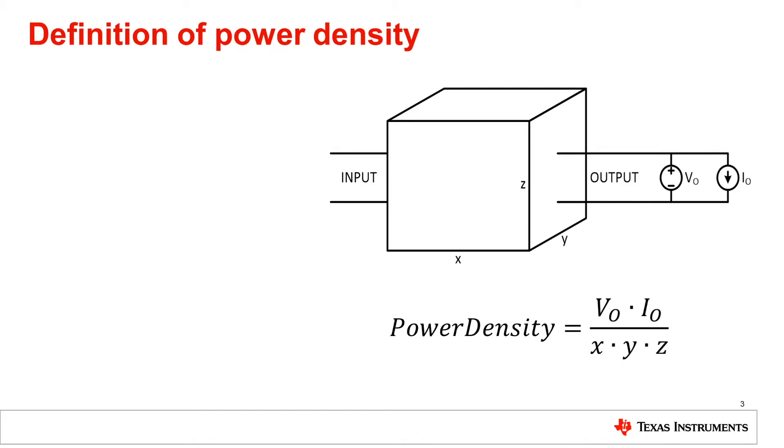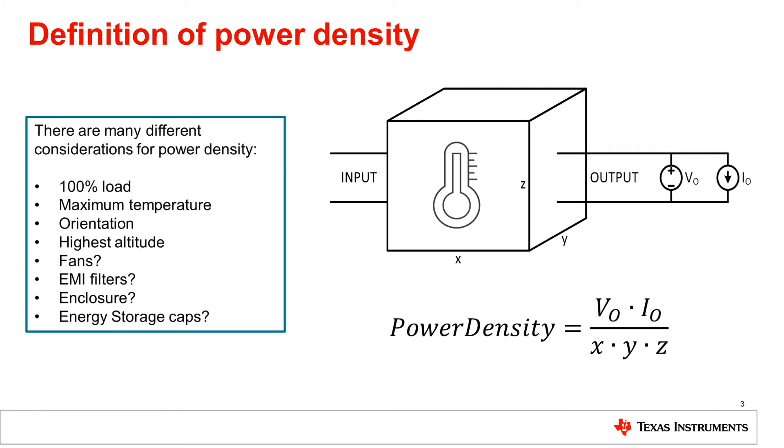The output power in this case corresponds to the continuous output power the unit can deliver under worst-case environmental conditions. The relevant power capability may be affected by the combination of ambient temperature, maximum acceptable case temperature, orientation, altitude, and expected lifetime.